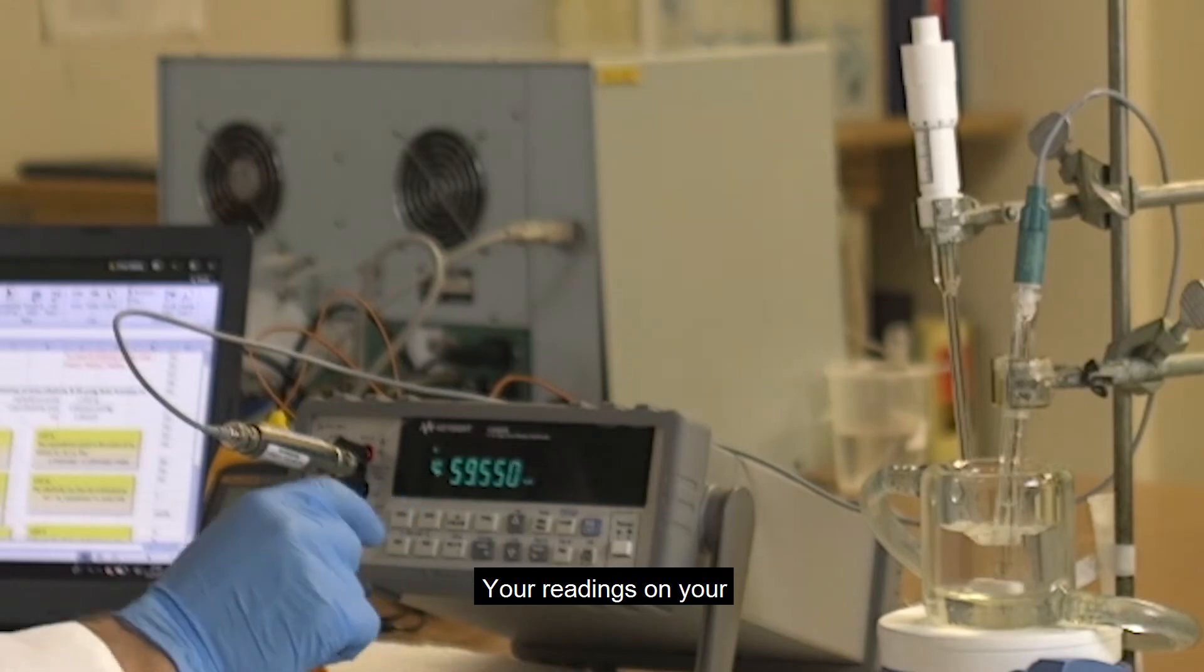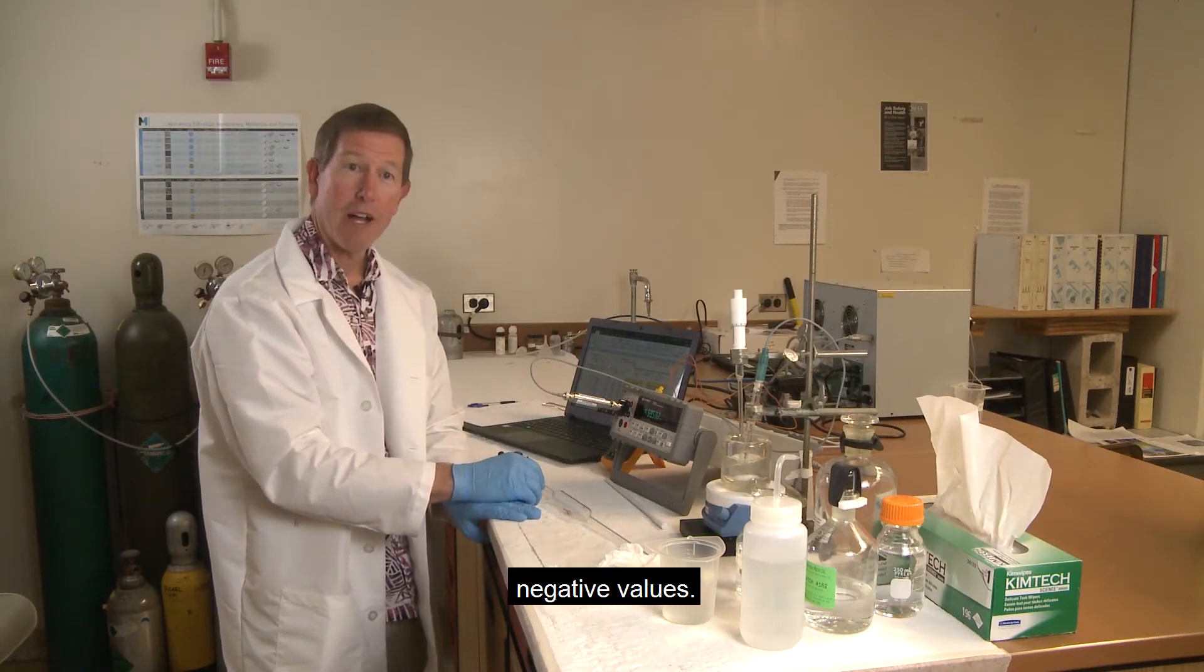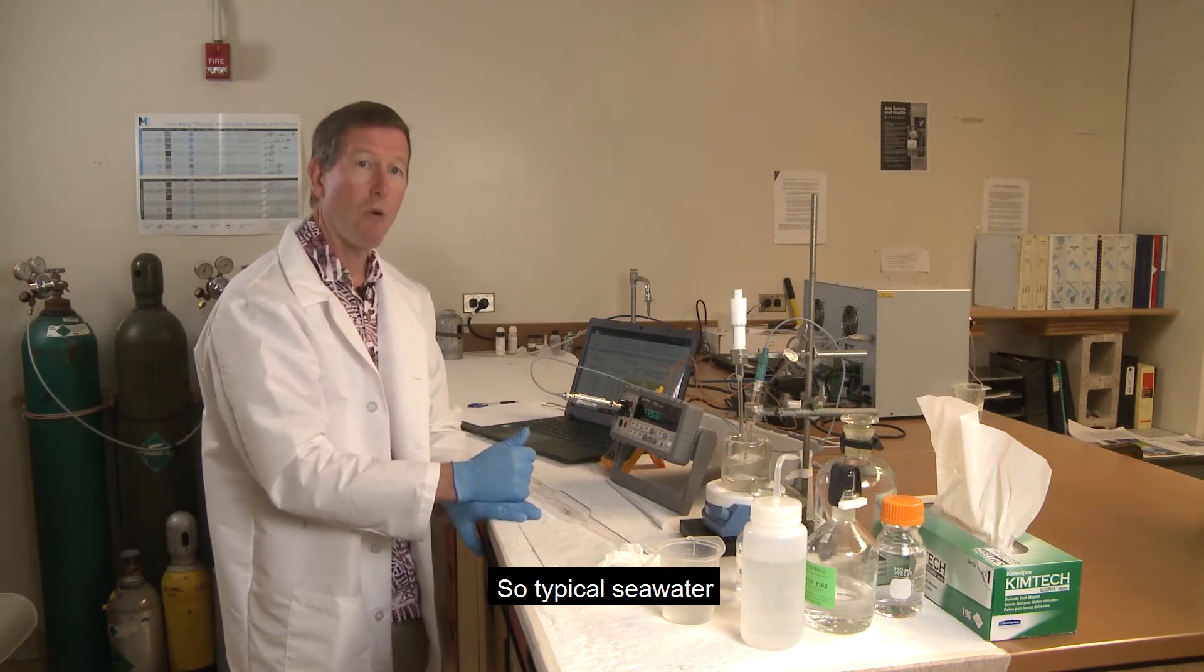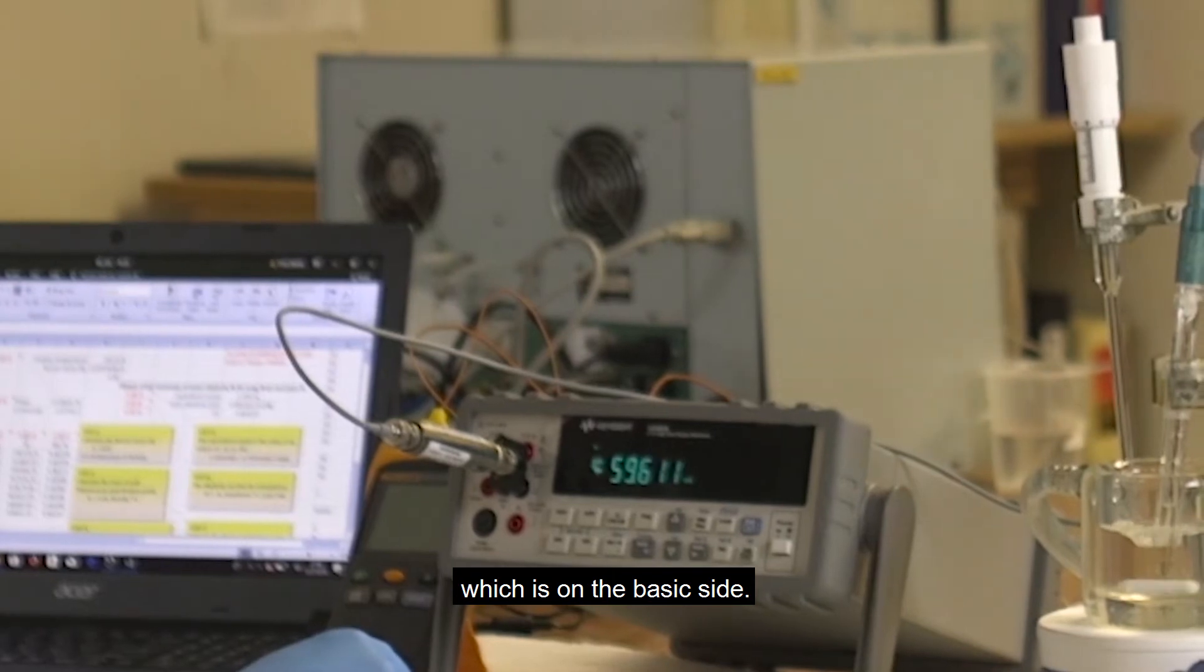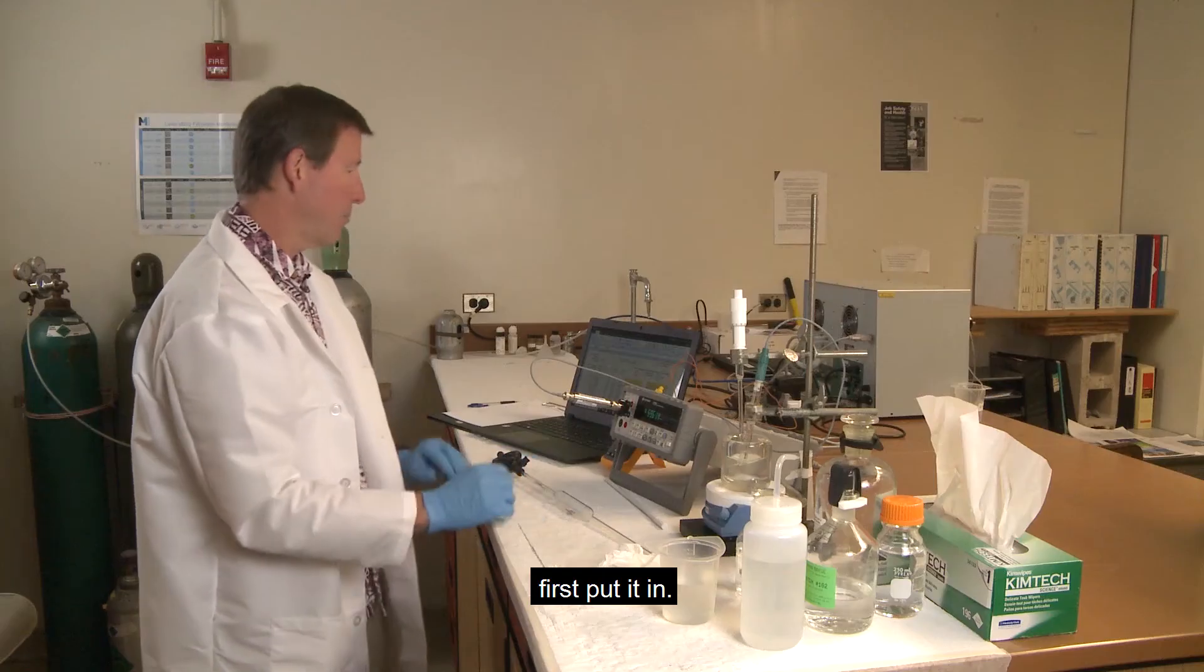Your readings on your voltmeter should be in the negative values. That means it's a basic solution, so typical seawater is a pH of around eights, which is on the basic side. So you should be getting negative readings when you first put it in.